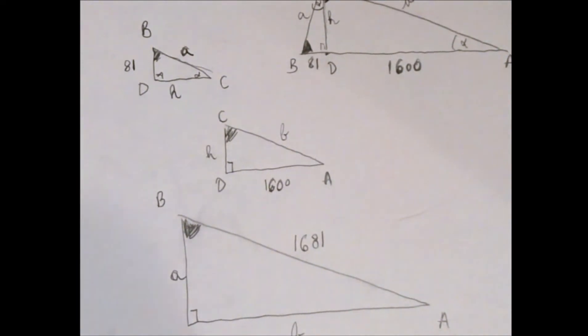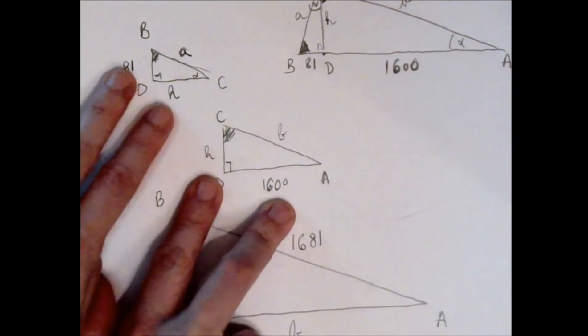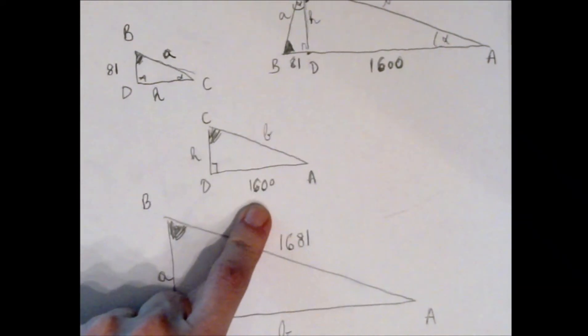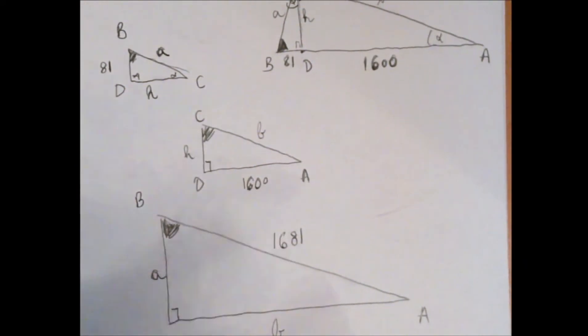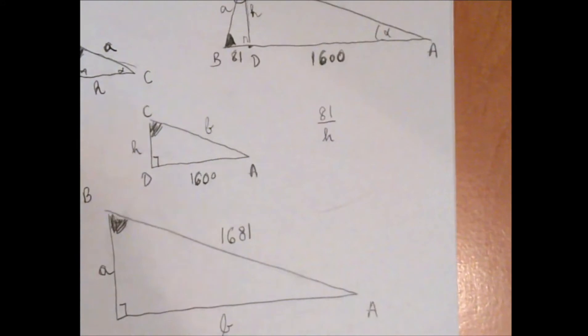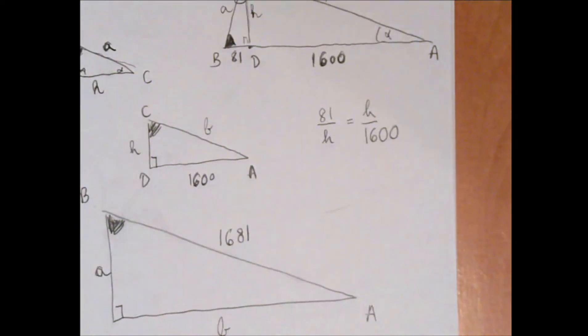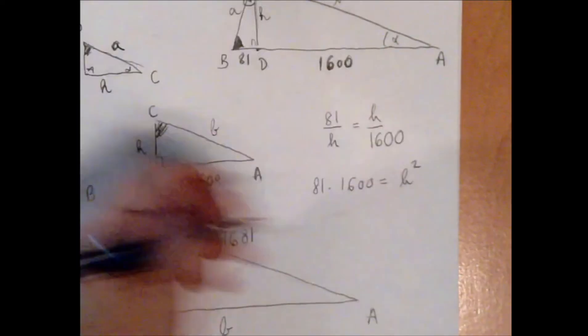This is a bottleneck in this problem. This ratio: 81 and h, h and 1600—there are two sides that are unknown but they are the same. So we can write 81 over h equals h over 1600. Now after we multiply both sides by 1600h, we get 81 times 1600 equals h².